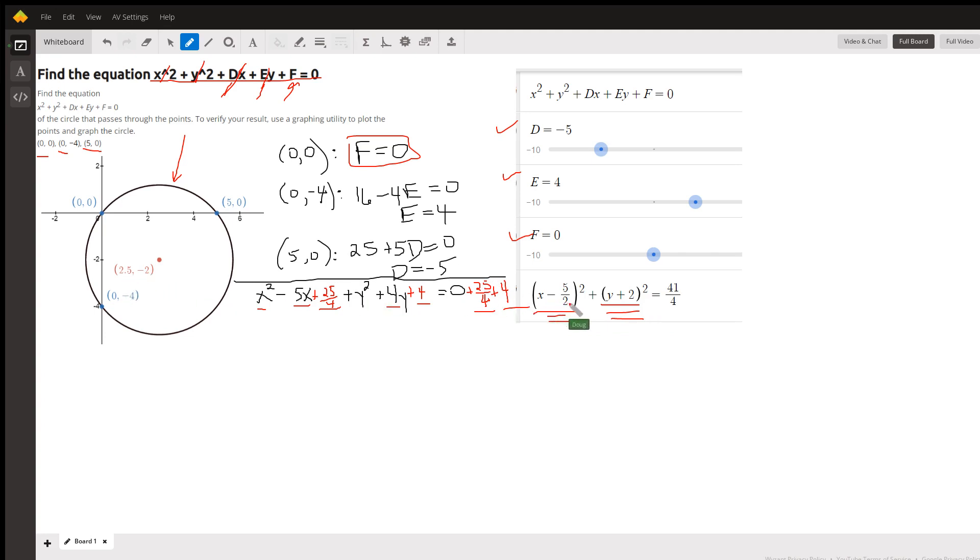And now you can identify the center and the radius. The center is at negative 5 halves, negative 2. And the radius is the square root of that number right there. So the square root of 41 over 2 is the radius.